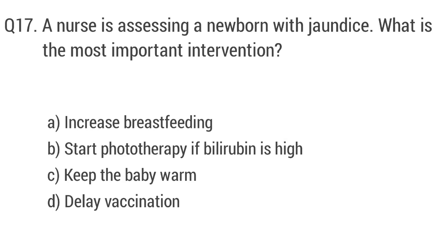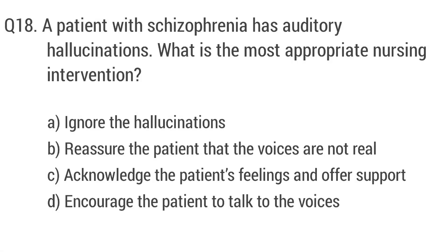Question number seventeen. A nurse is assessing a newborn with jaundice. What is the most important intervention? The right answer is option B: start phototherapy if bilirubin is high.